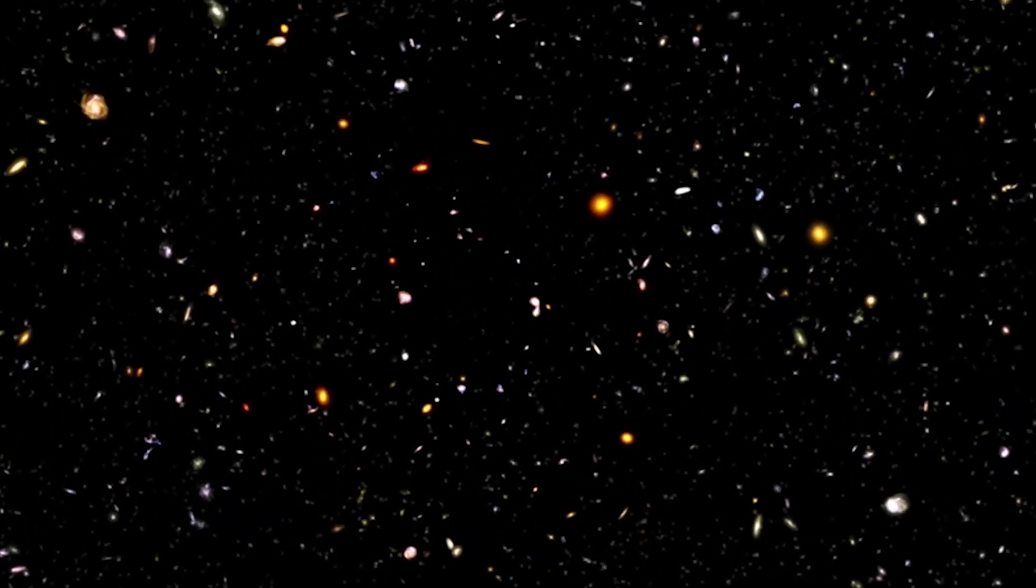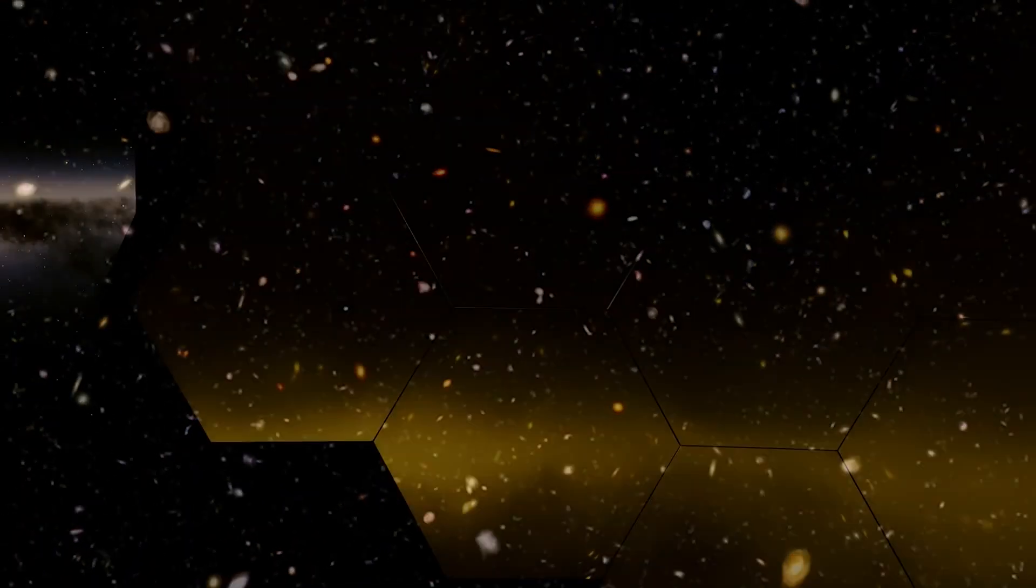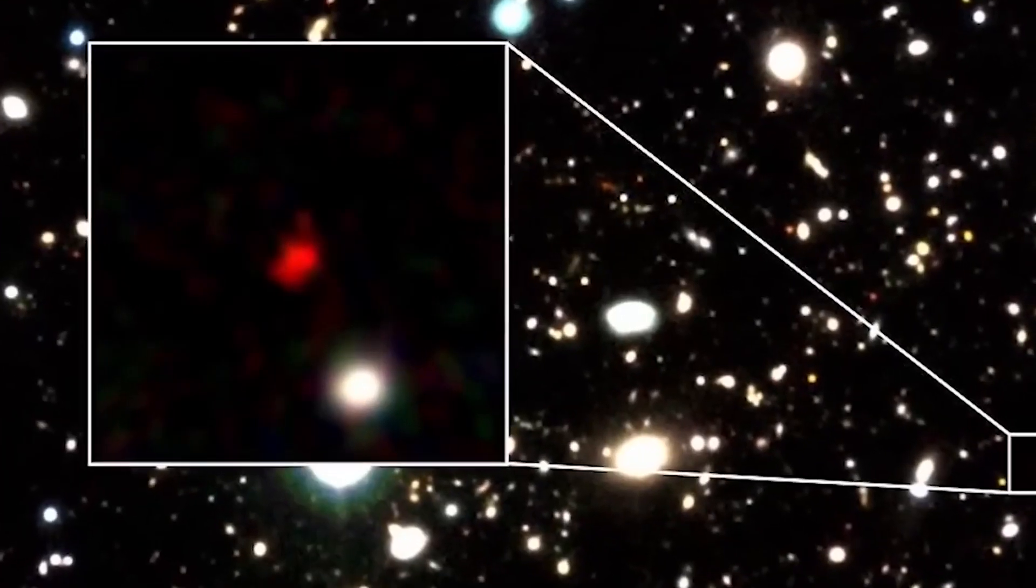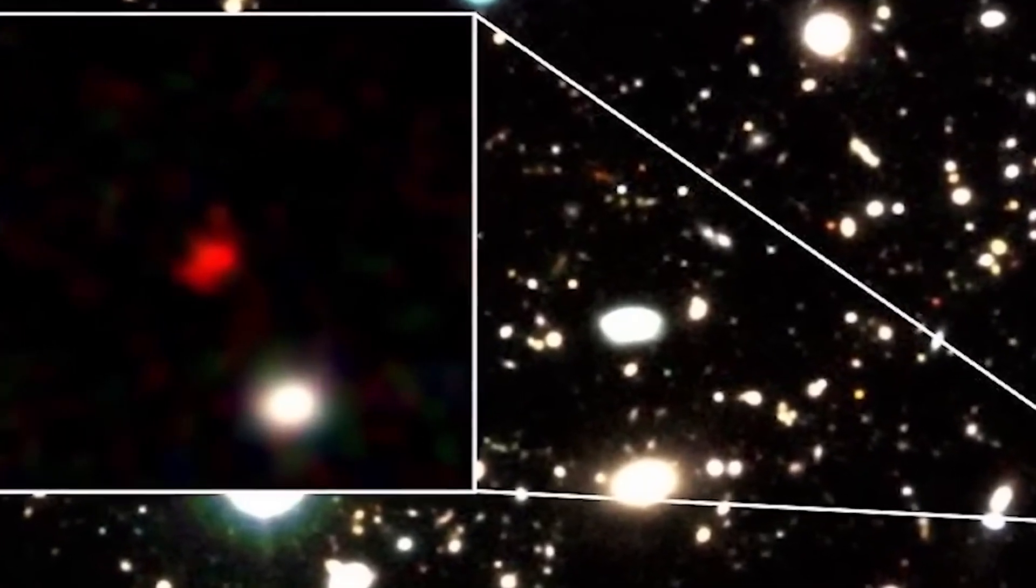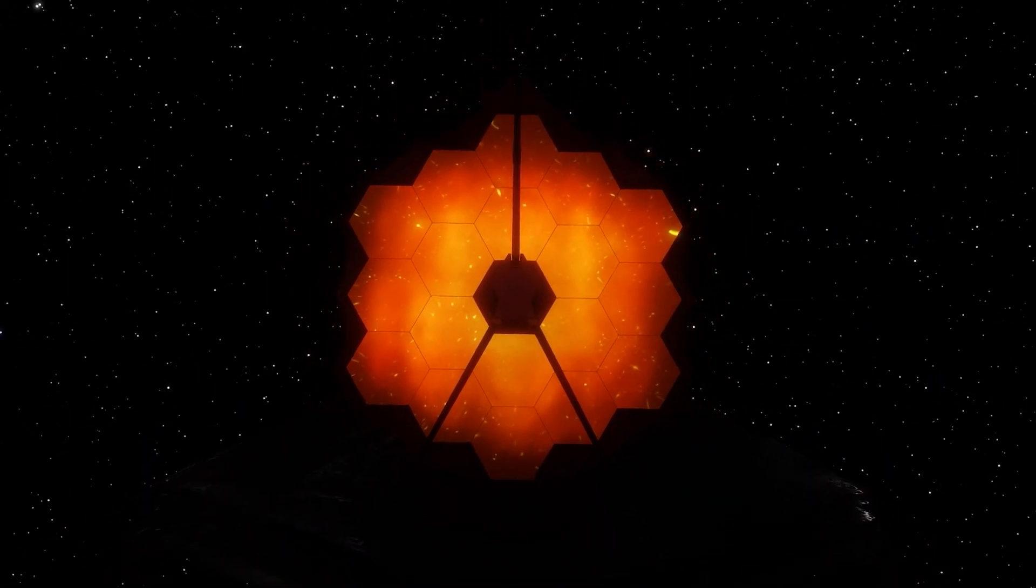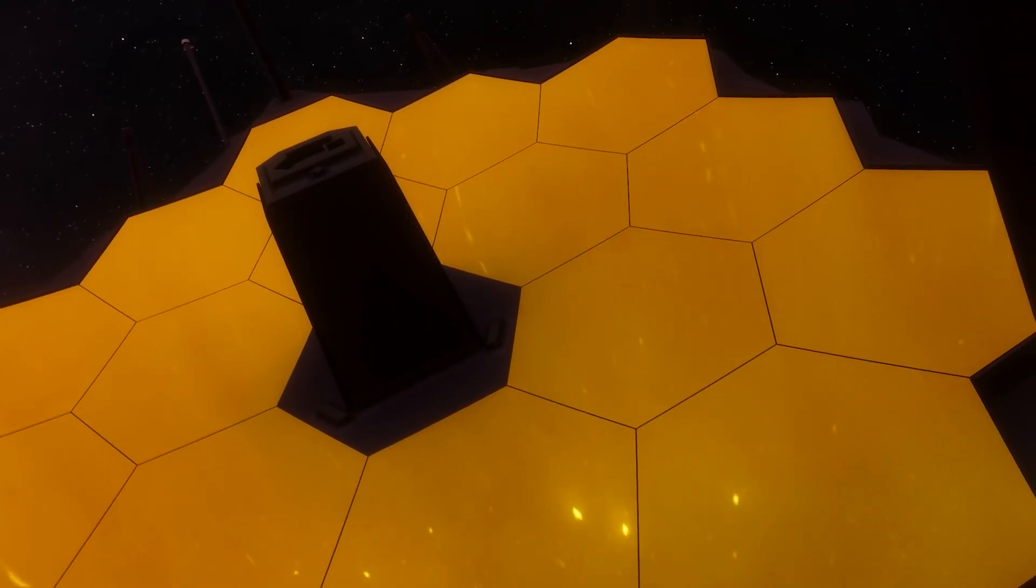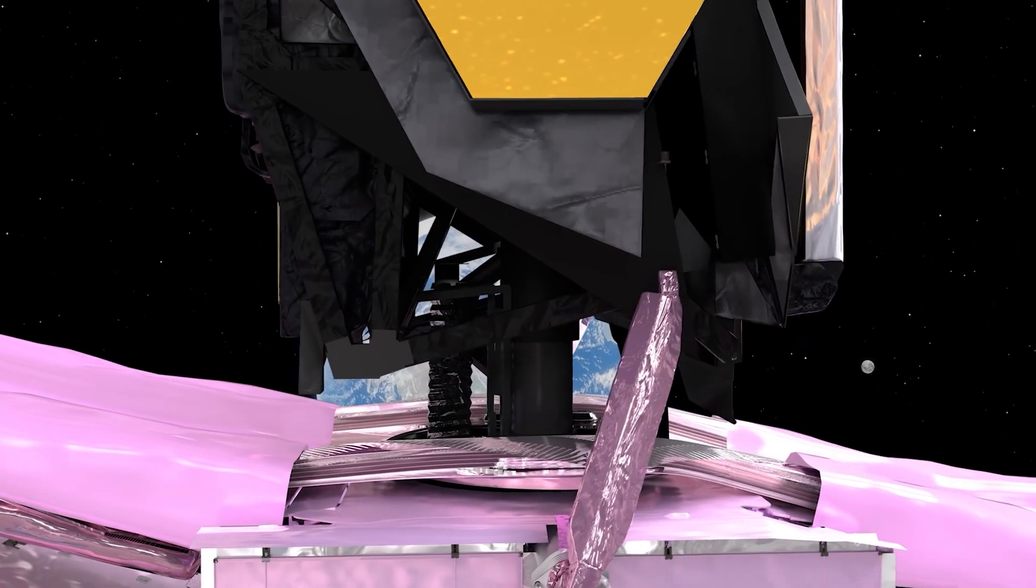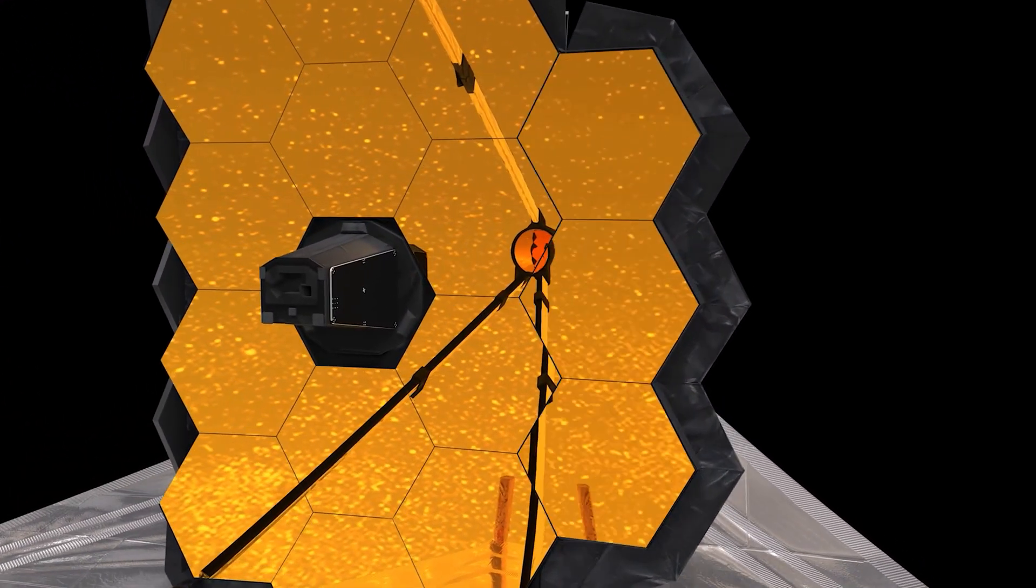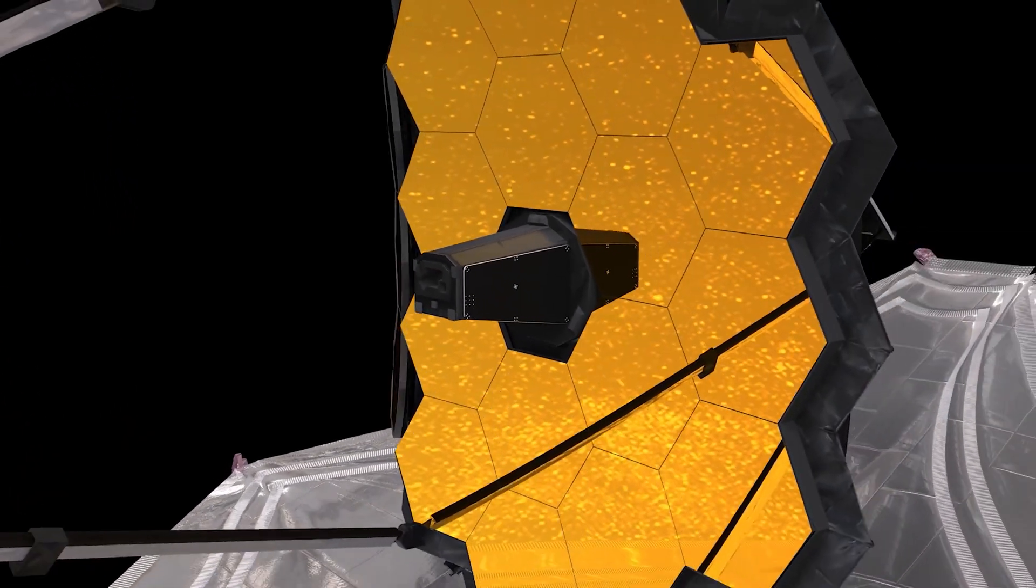Over the years, theories defining the evolution of the universe have undergone remarkable changes due to new discoveries and advances in research technology. These findings have required adjustments to existing theories and, on occasion, the creation of new theories. The fundamental goal of the James Webb Telescope has been not only to provide clear images of space beyond our planet, but also to explore the farthest regions of the cosmos in search of stars and galaxies formed shortly after the Big Bang.